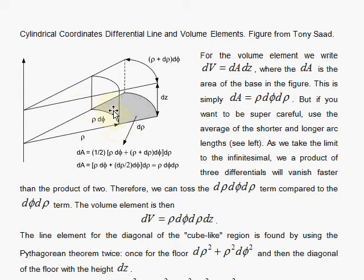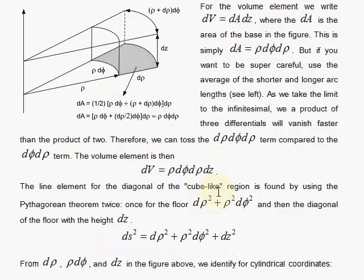So if you want the volume of this little cube, you would take the d rho times the rho d phi times dz. That's nice. If you want to look at the arc length squared, a diagonal here, you would square these and add them together using the Pythagorean theorem. So d rho squared plus rho squared d phi squared plus dz squared.